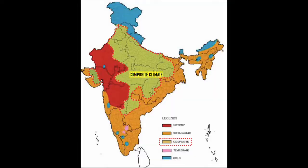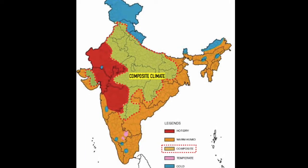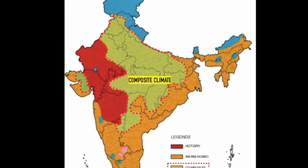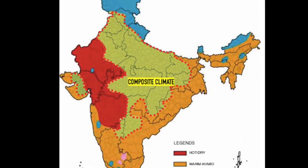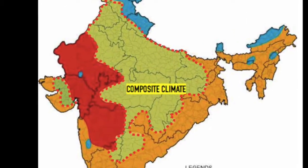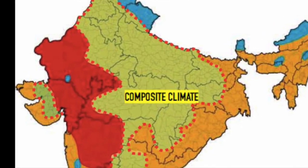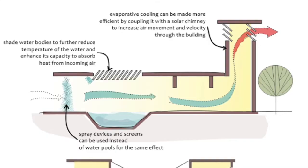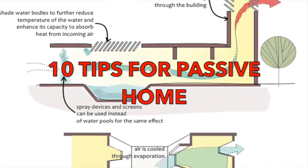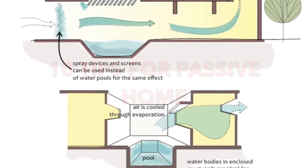Some of the places which fall under this composite climate are Delhi, Haryana, Punjab, Uttar Pradesh, Bihar, Chhattisgarh, Jharkhand and Madhya Pradesh. Here are 10 tips which you have to follow for designing a passive home for this composite climate.